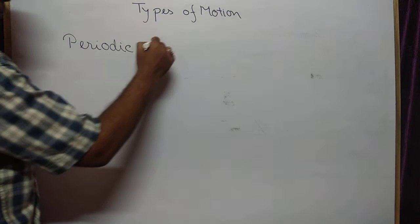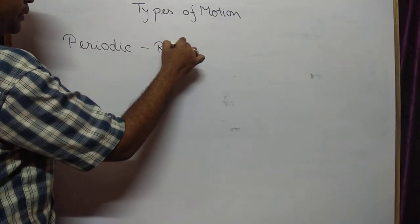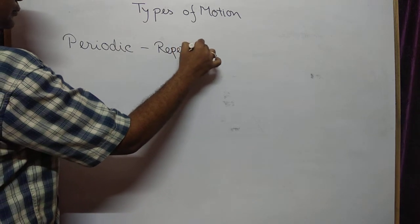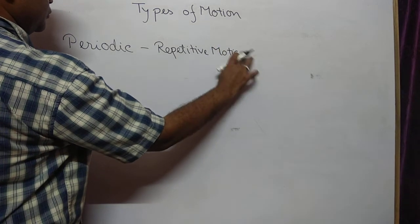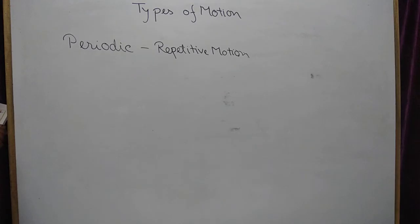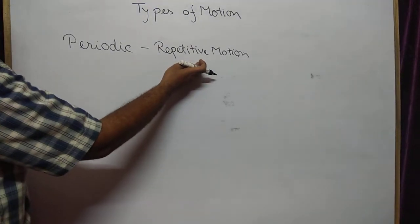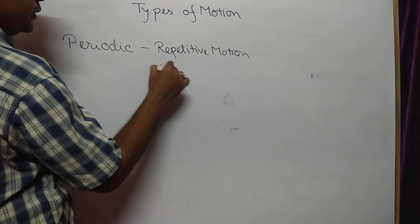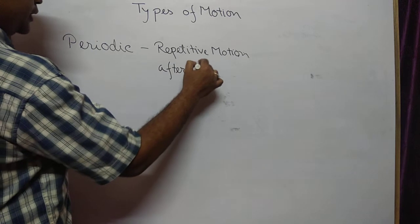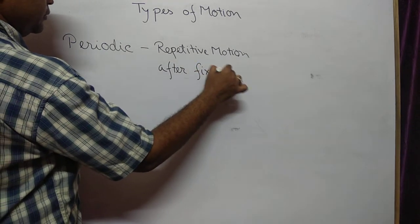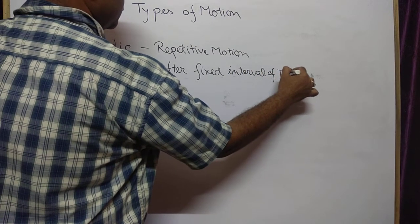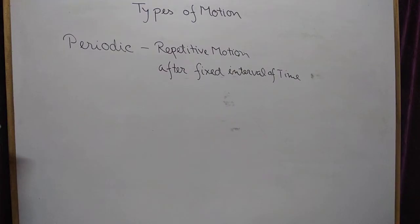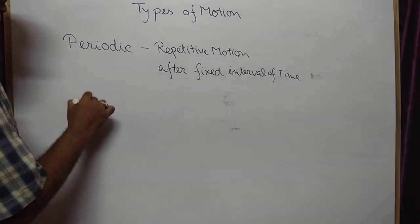The difference between periodic and repetitive motion: repetitive motion simply repeats itself, while periodic motion repeats itself after a fixed, regular interval of time. A good example is the piston of a motor.